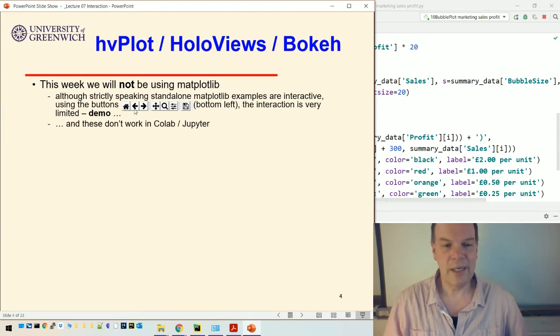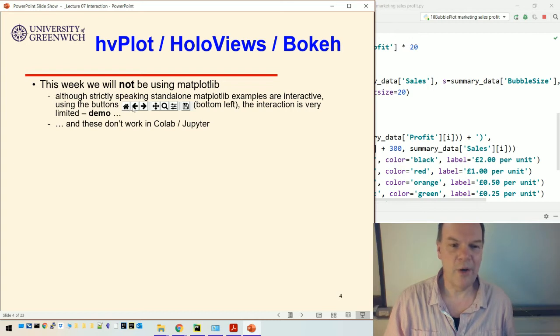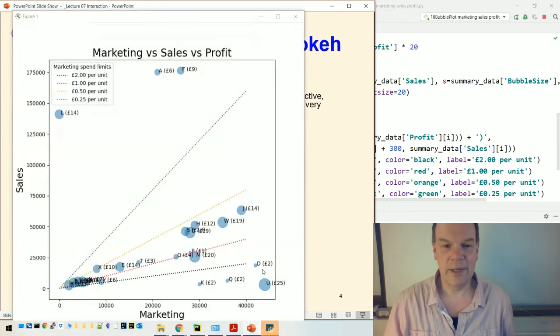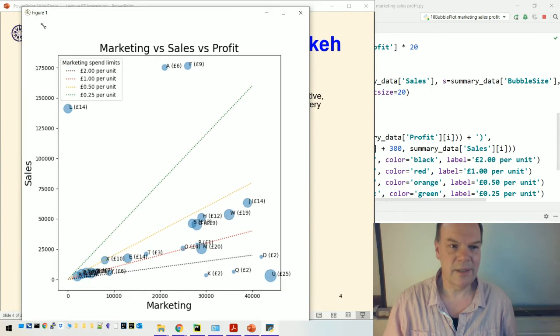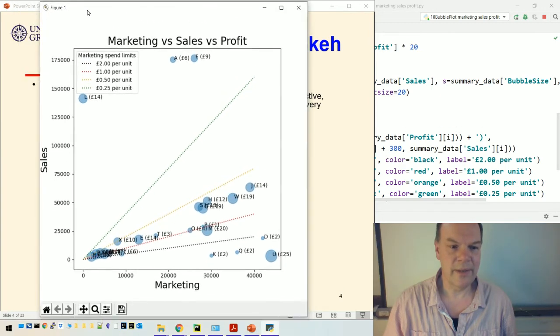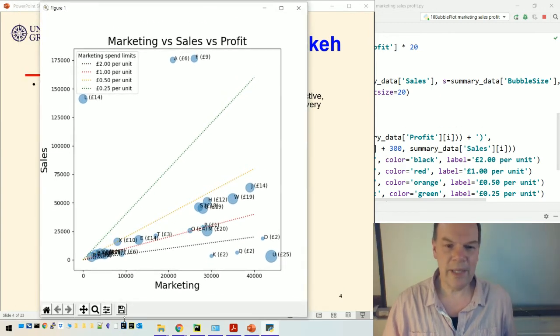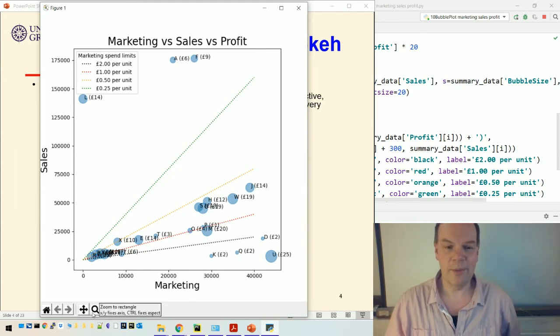Here's an example. If I run that, you'll find when the example comes up there's a number of buttons at the bottom including the home, the backwards and forwards, the panning button and the zoom button and the save button, and all of those things can be used interactively. Let me just squash that down a little bit. There are the buttons at the bottom. We've never really used them very much but they are very useful if you want to explore the picture.